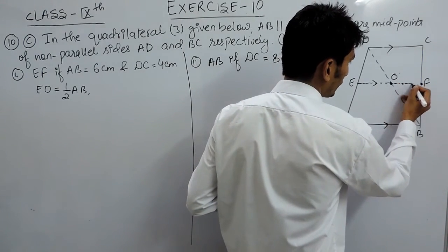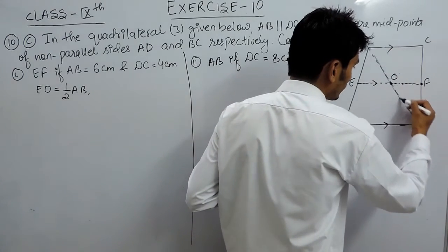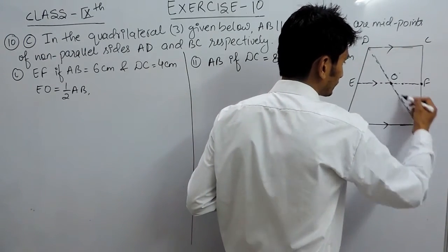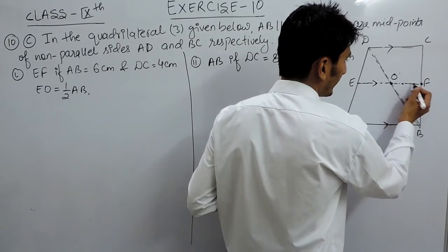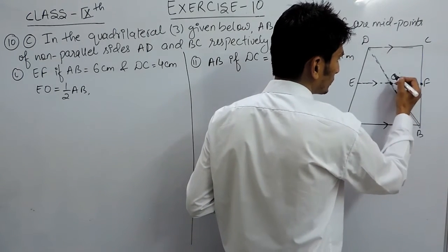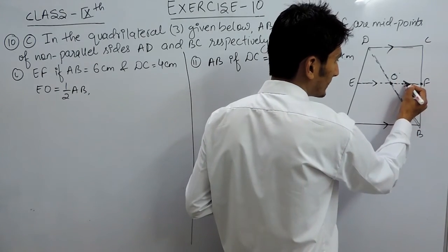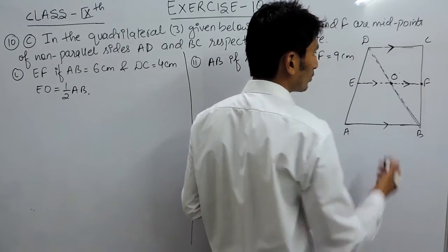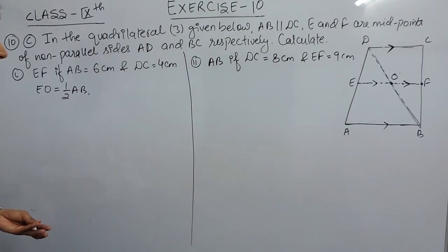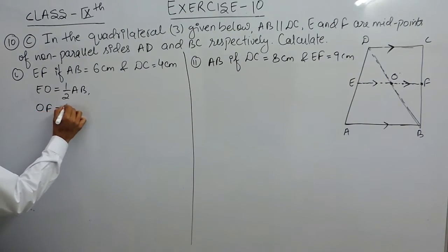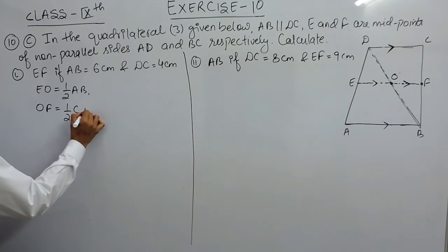Similarly, these two are the midpoints. If I join the midpoints in triangle DBC, clearly if I join the midpoints this side again should be parallel to the third side and this side should be equal to half of the third side. So in triangle DBC, OF must be equal to half of CD.